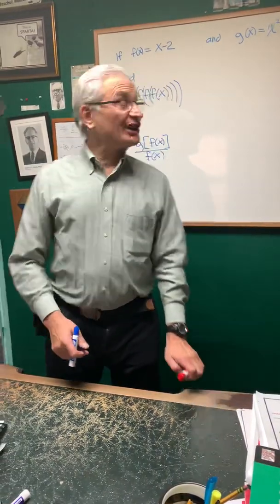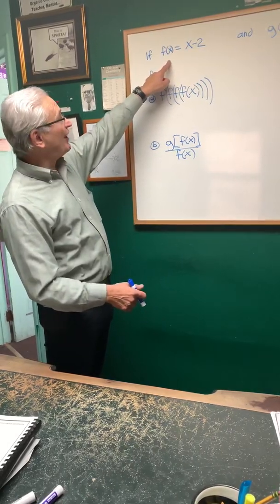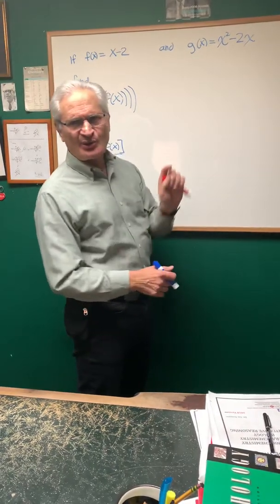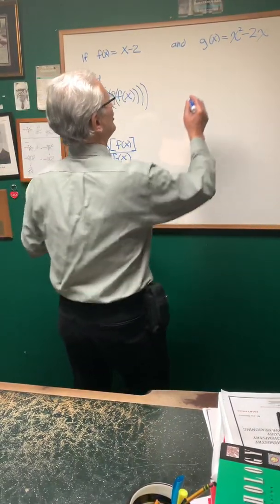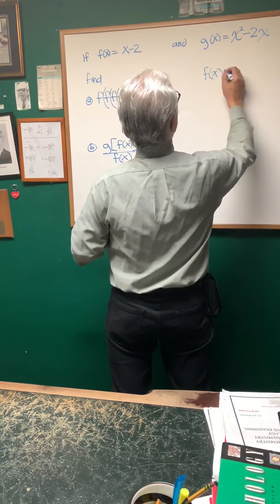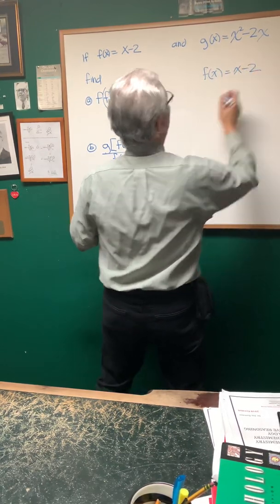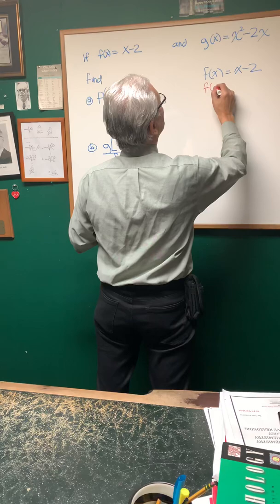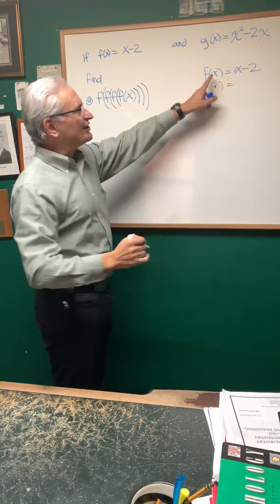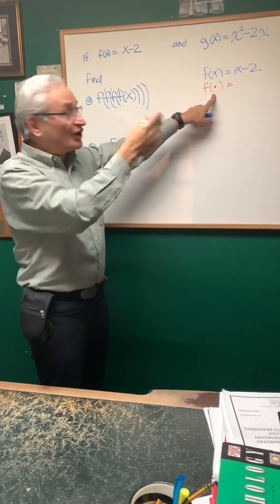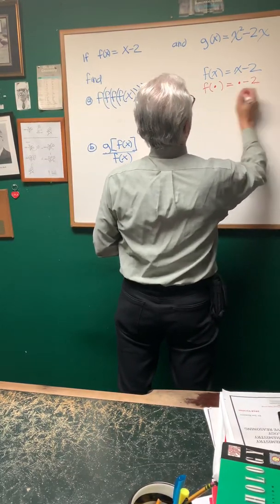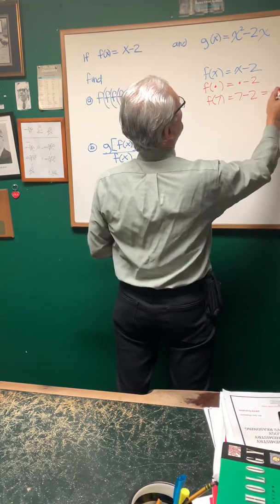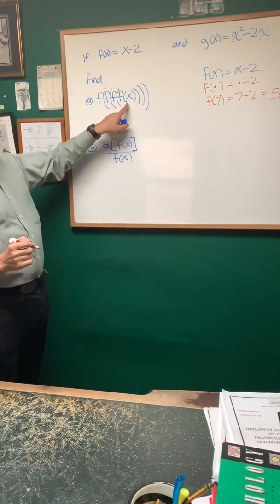We're going to do function notation today, and we have two functions defined: f of x equals x minus 2, and g of x equals x squared minus 2x. As a primer for function notation, if I have a notation like that, how do I evaluate it? If I have f of whatever number, I replace x with that number on the right-hand side. So if I have f of 7, this is going to be 7 minus 2, or 5.